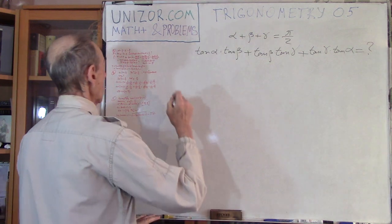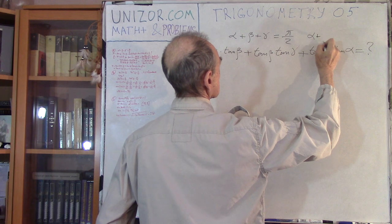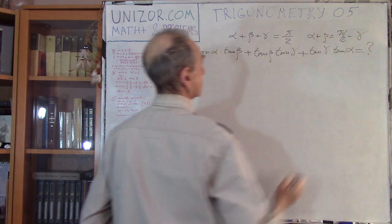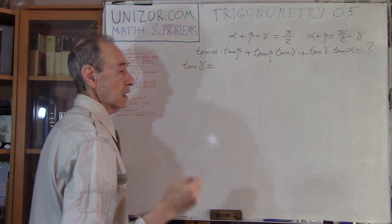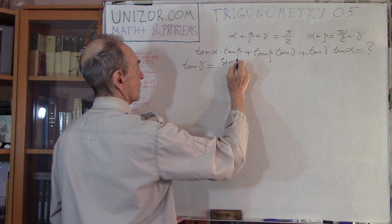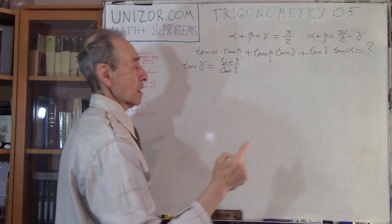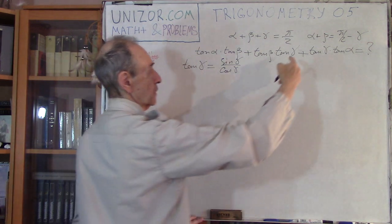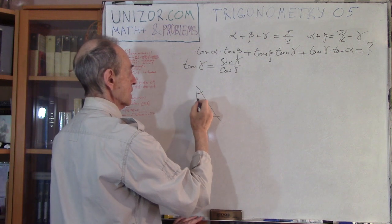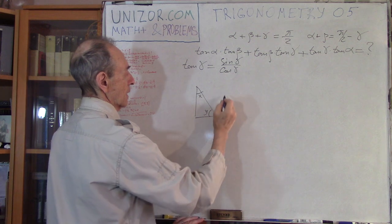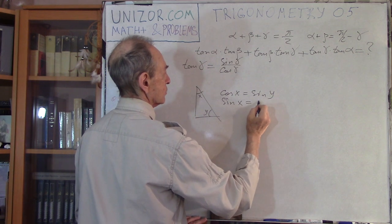What should I do? First of all, from this I can derive that alpha plus beta is equal to pi over 2 minus gamma. If I present tangent gamma — tangent by definition is sine divided by cosine. At the same time, for acute angles, remember from the right triangle: if this is angle x and this is angle y, then the cosine of x is equal to sine of y.